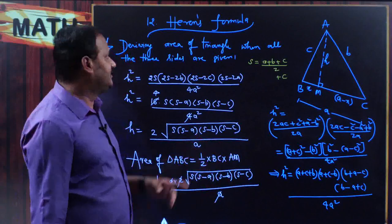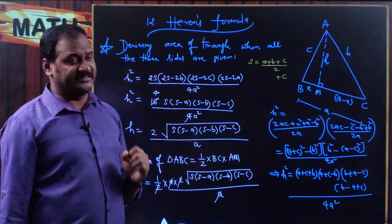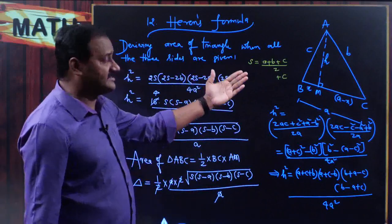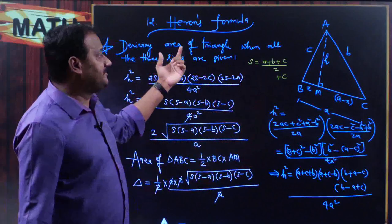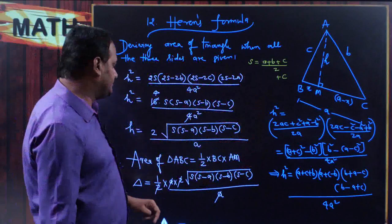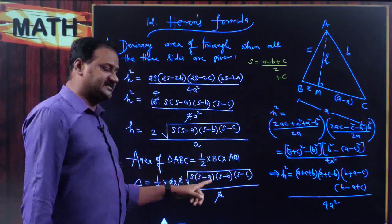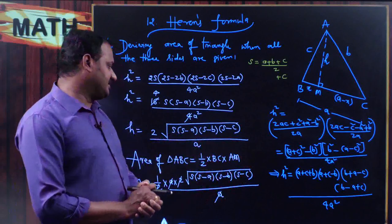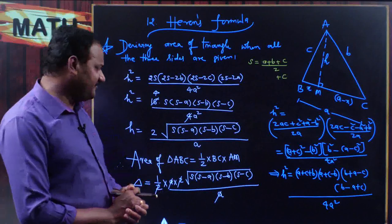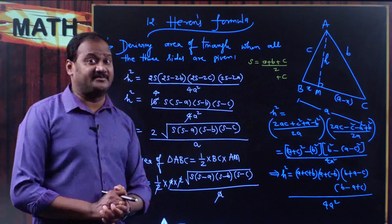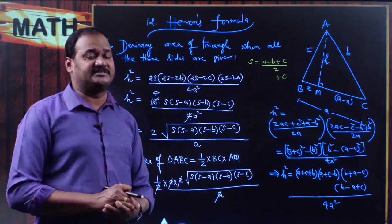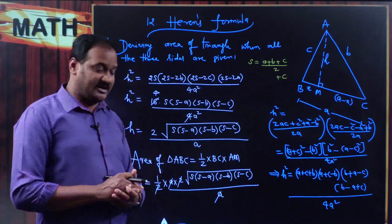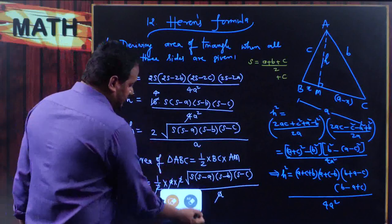So when the three sides are given as small a, small b, small c, the area of the triangle using Heron's formula is √[S(S − a)(S − b)(S − c)]. You will have to remember this because it is one of the most important and useful formulas when all three sides are given. In grade 10, many problems can only be solved using this formula exclusively.